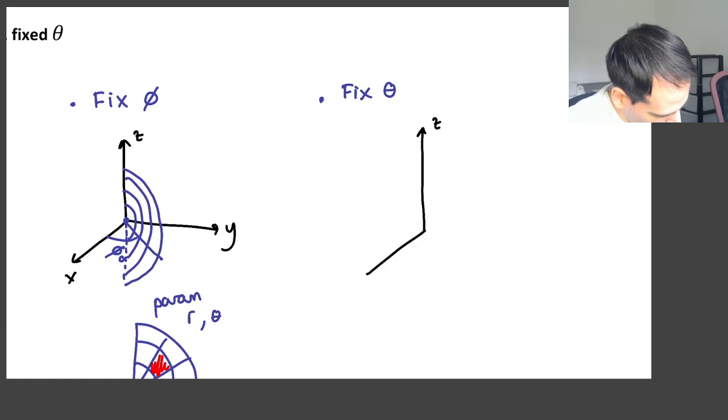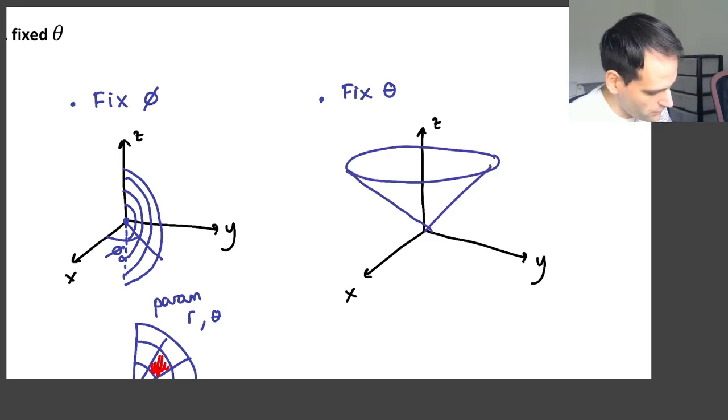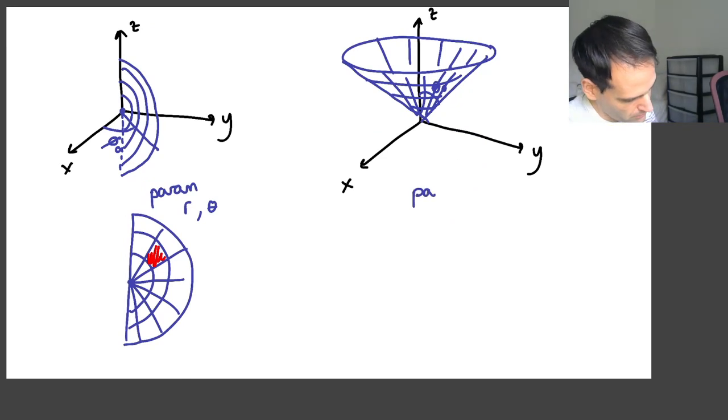I'd suggest you pause the video and think about it before I draw it. So it looks like a cone. It looks like a cone because θ is fixed. The angle with the z-axis is fixed. But we can still move up and down the cone by changing z. And we also can move around the cone by changing φ. So the surface of a cone can also be described in spherical coordinates. So here the two parameters are r and φ.